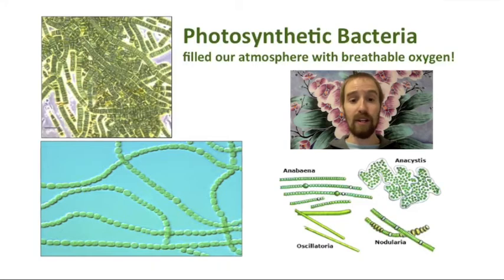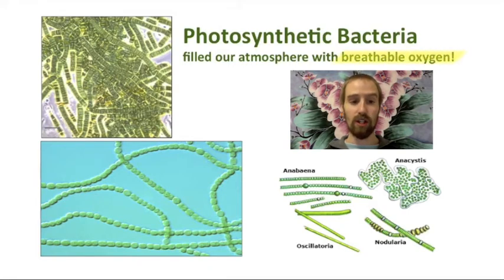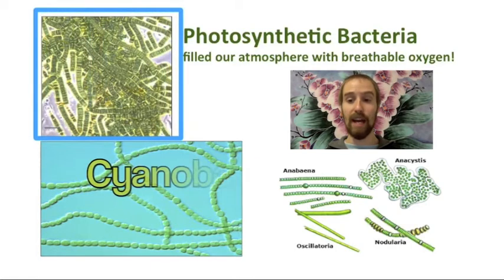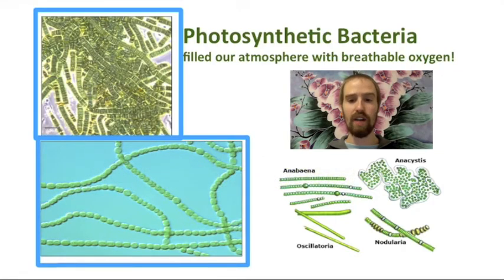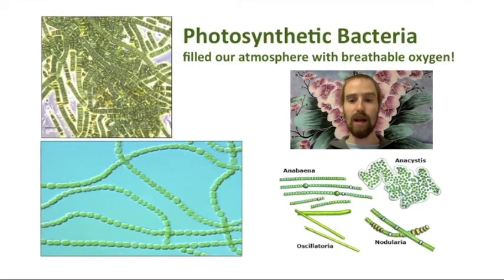Over a period of about a billion years or more, photosynthetic prokaryotes — bacteria — generated the oxygen gas that now makes up over 20% of our atmosphere and upon which our lives depend. These single-celled organisms used the sun's energy to transform carbon dioxide in the atmosphere into organic carbon compounds and oxygen gas. Here we see a few modern examples of photosynthetic bacteria called cyanobacteria. Although each individual cell is its own individual life form, these bacteria often live together in colonies. A very long time ago, our evidence suggests, bacteria like these made it possible for certain eukaryotic cells to photosynthesize as well.